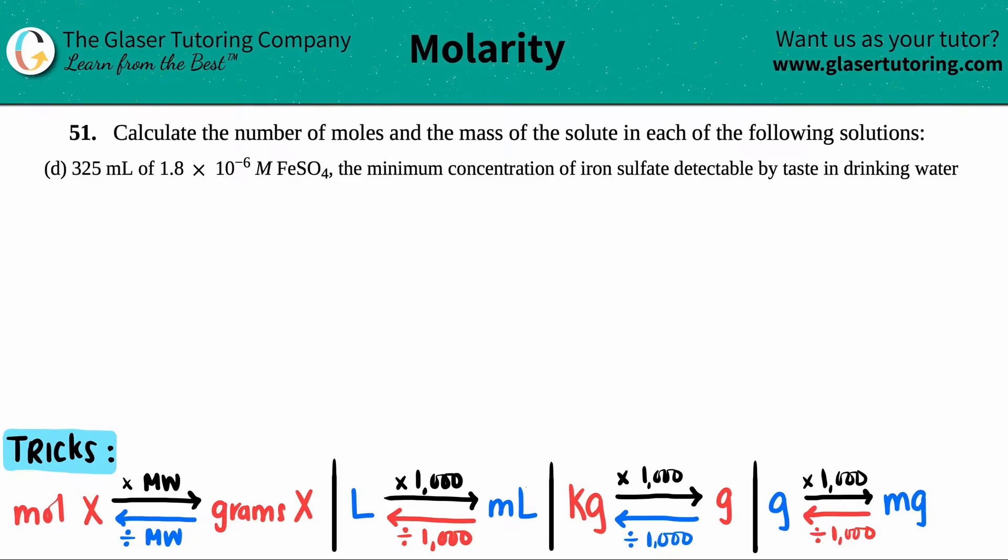Number 51. Calculate the number of moles and the mass of the solute in each of the following solutions. We have letter D. In this case, we have 325 mL of 1.8 times 10 to the negative 6 molar iron 2 sulfate solution, FeSO₄, the minimum concentration of iron sulfate detectable by taste in drinking water. Let's do the math.